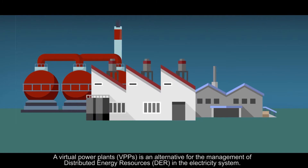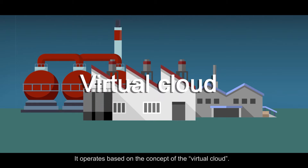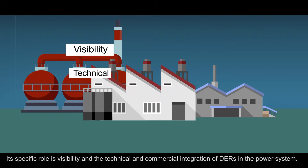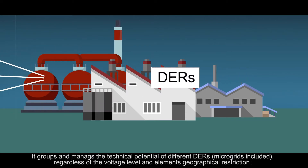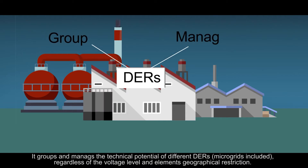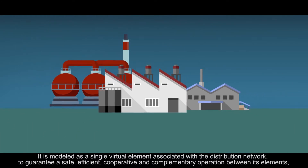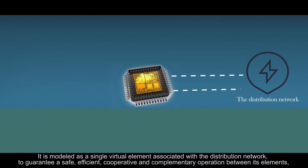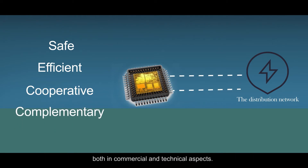A virtual power plant is an alternative for the management of distributed energy resources in the electricity system. It operates based on the concept of the virtual cloud. Its specific role is visibility and the technical and commercial integration of distributed energy resources in the power system. It groups and manages the technical potential of different distributed energy resources, regardless of the voltage level and elements' geographical restriction. It is modeled as a single virtual element associated with the distribution network to guarantee a safe, efficient, cooperative and complementary operation between its elements, both in commercial and technical aspects.